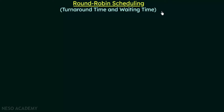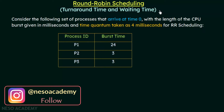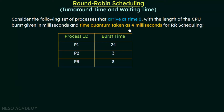In the previous lecture we studied round robin scheduling. In this lecture we will see how to calculate the turnaround time and waiting time for round robin scheduling. We will take an example of a CPU that follows round robin scheduling with the following set of processes that arrive at time 0, with CPU burst lengths given in milliseconds and a time quantum of 4 milliseconds.